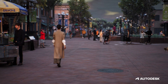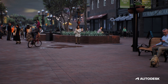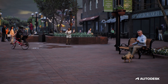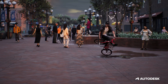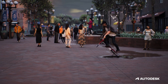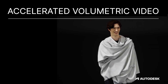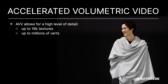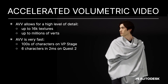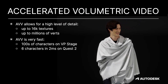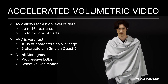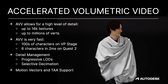This is AVV — Arcturus' new Accelerated Volumetric Video format. What you're seeing can all be rendered in real time on commodity hardware. In this scene there are 70 independent volumetric video streams. Accelerated Volumetric Video allows for a very high level of detail: up to 16k textures and up to millions of verts. AVV is very fast — you can have hundreds of characters on a virtual production stage, or six characters running in two milliseconds per frame on a Quest 2. Detail management is provided by progressive LODs and a selective decimation system, and motion vectors help support temporal anti-aliasing and motion blur.